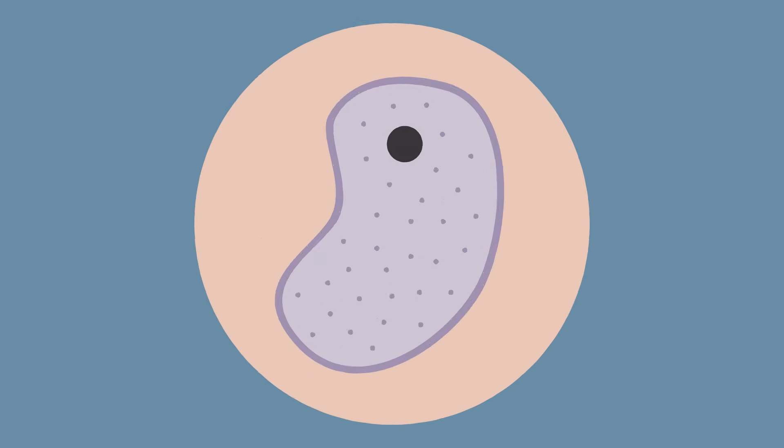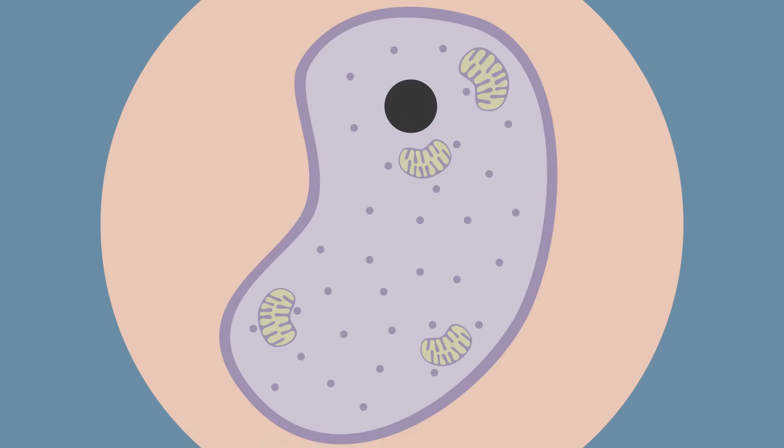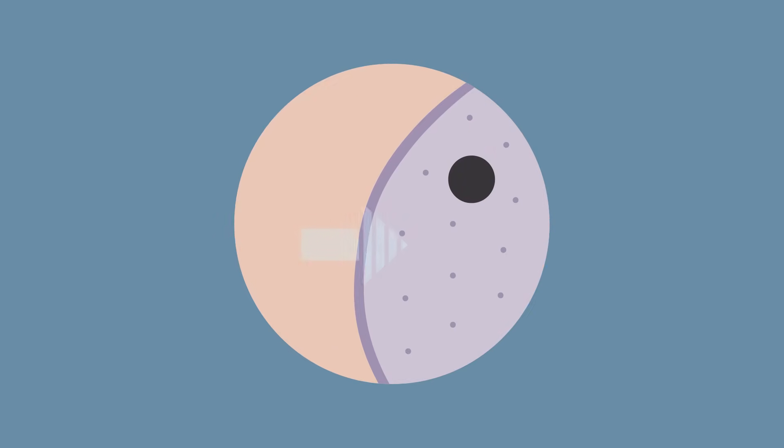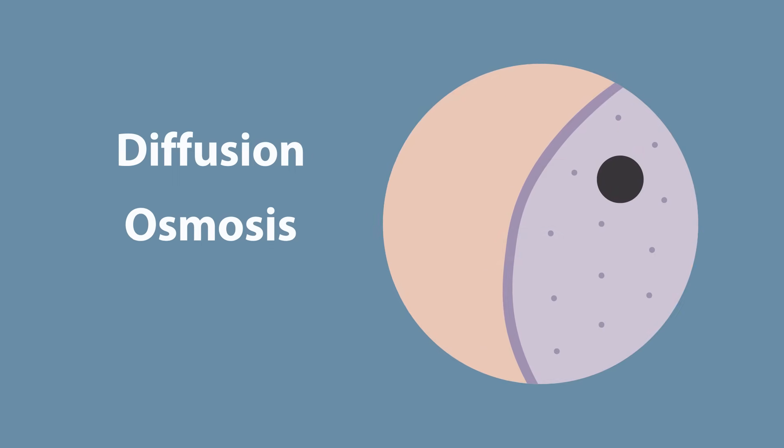Cells which carry out a lot of active transport often have lots of mitochondria to give them the energy they need. So from these two parts, you should know how cells take in substances and get rid of waste by diffusion, osmosis, and active transport.